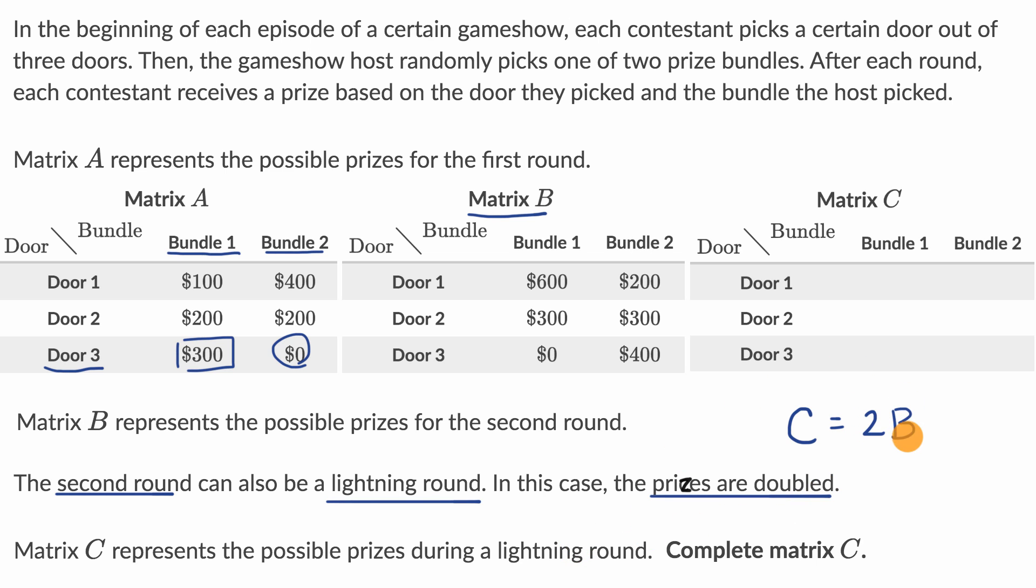When we multiply a matrix times a scalar like this, times just a number, we just multiply each of these entries by that number. If we take $600 and multiply that by two, that is going to be $1,200. The prizes are doubled in a lightning round.